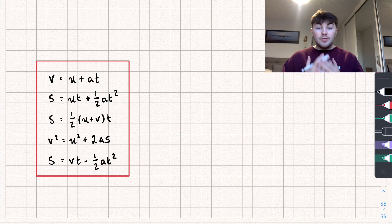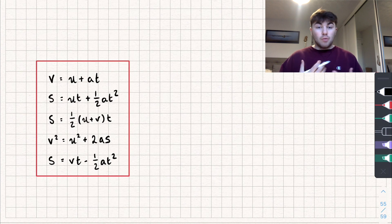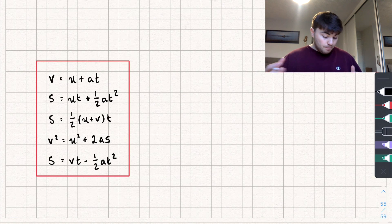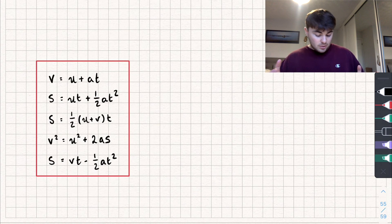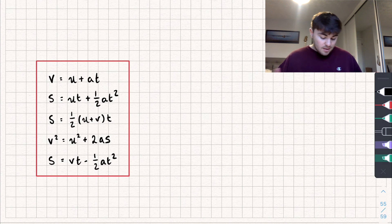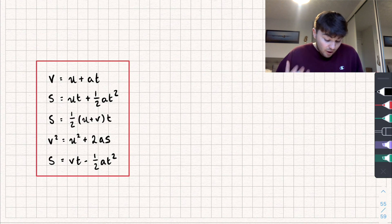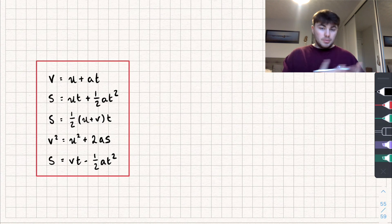Now let's look at the five equations. You are given these, but sometimes questions ask you to derive them — I'll cover that in my next video. The equations are: v = u + at; s = ut + ½at²; s = ½(u + v)t; v² = u² + 2as; and s = vt − ½at². Those are the five SUVATs you will be given, but it's also good to remember them.